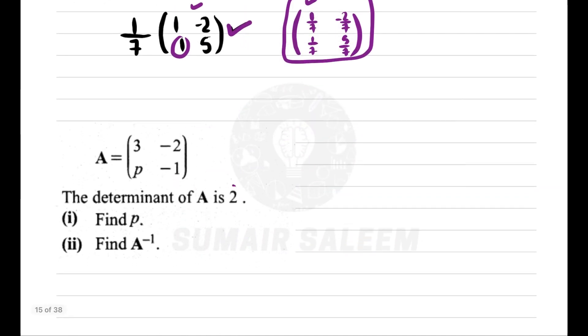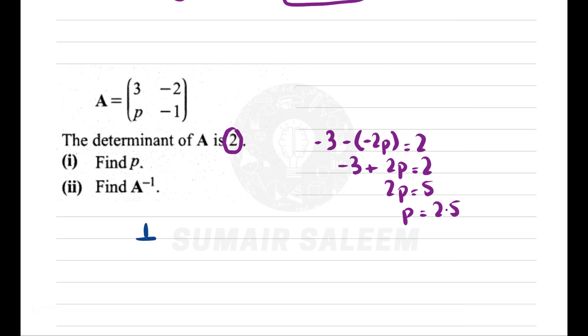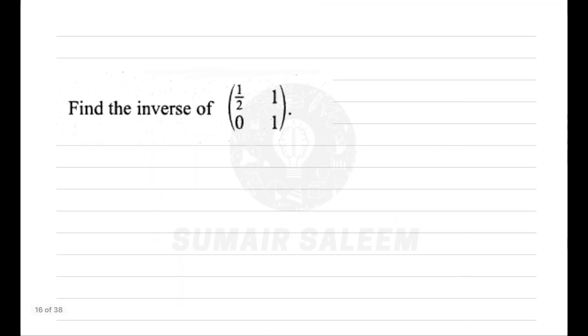Now let's do this one. Determinant is told to be 2. So AD: 3 into minus 1 is minus 3, minus BC which is minus 2p, equals 2. So minus 3 plus 2p equals 2. Therefore 2p equals 5, and my value of p is 2.5.